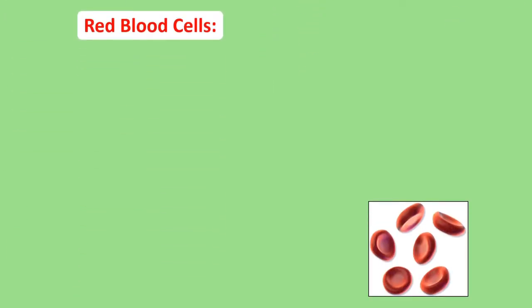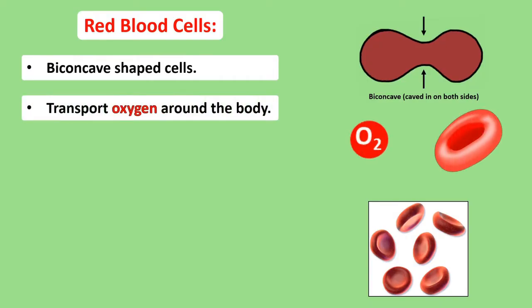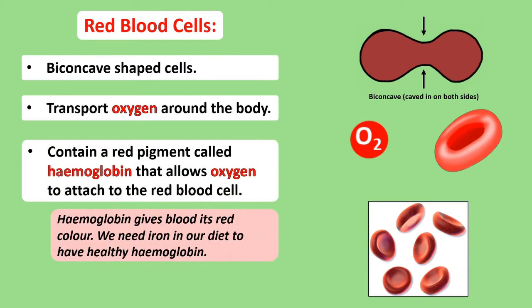Red blood cells are by far the most abundant type of cell in our blood. They're small biconcave shaped cells. The word concave means to have a surface that curves inwards, and the prefix bi means two in Latin, so biconcave describes how red blood cells have two surfaces that hollow inwards. Red blood cells transport oxygen — they pick it up in the lungs and carry it to cells all around the body. What lets them do this is hemoglobin, which is made from iron and protein. Oxygen atoms latch onto hemoglobin to be transported around the blood. Hemoglobin has a deep red colour when it combines with oxygen, which is why our blood is red. We need iron in our diet to have healthy hemoglobin and hence healthy blood.